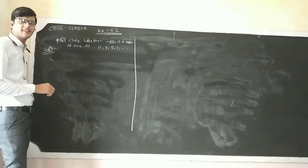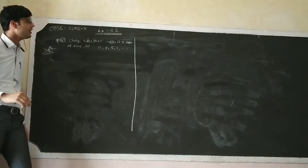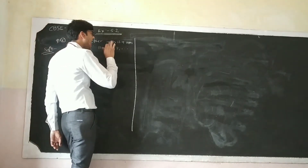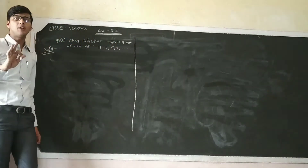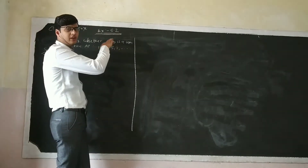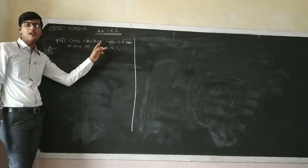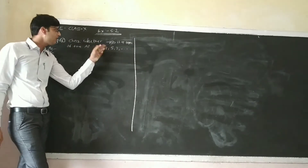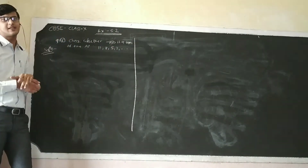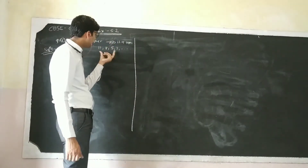Question number 6: check whether minus 150 is a term of the AP: 11, 8, 5, 2, ... If minus 150 is a term of the AP, then N should be a whole number or integer. If N comes out as a fraction or decimal, it means minus 150 is not a term.